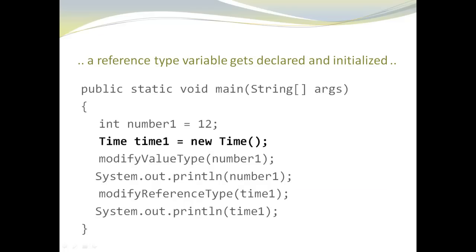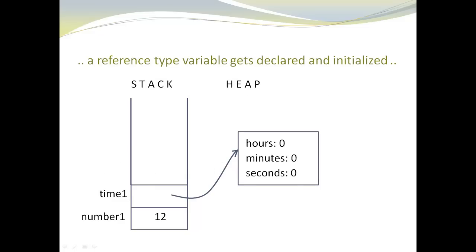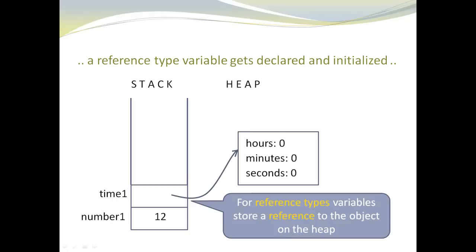Next, we create a reference type. The variable is called time1, it's of type Time, and we create a new Time object with the default constructor. In addition to number1, we now have a second variable on the stack, but this second variable does not include the actual Time object — it includes the address, the reference, that allows you to navigate to the Time object created on the heap. All my fields — hours, minutes, seconds — are set to zero because we used the default constructor. For reference types, variables store a reference to the object on the heap.